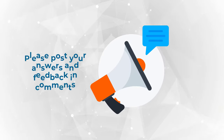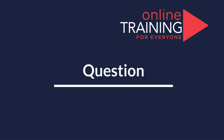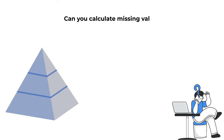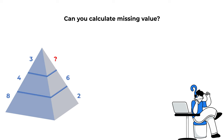Did you come up with the same conclusion? Please share your thoughts in comments. Here's a question for you to practice. You're presented with a triangle which is broken down into three equal horizontal parts. On the left side of the triangle, you see numbers 8, 4, and 3 going from bottom to top. And on the right side of the triangle, you see numbers 2, 6, and one number is missing.